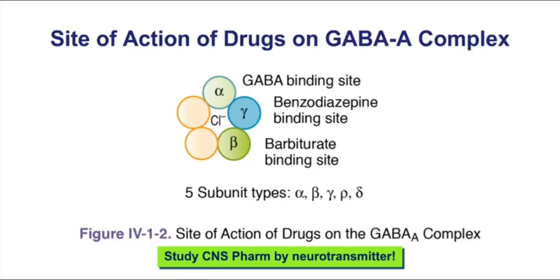Let's take a look at the GABA-A complex shown in this figure. GABA-A contains five subunits — alpha, beta, gamma, and a couple of other subunits. Most importantly, the GABA-A complex is a chloride channel. GABA has its own distinct binding site. Benzodiazepines have a separate and distinct binding site from GABA. Barbiturates have their own binding site. You might also note that alcohol will also bind somewhere on the GABA-A complex, and that is also a distinct site compared to benzos, barbs, and GABA.